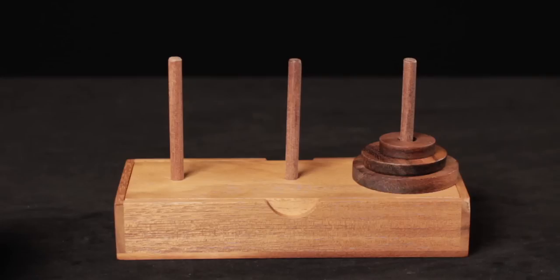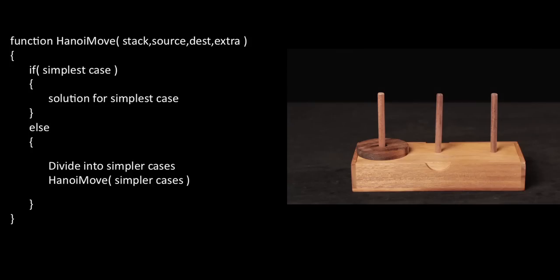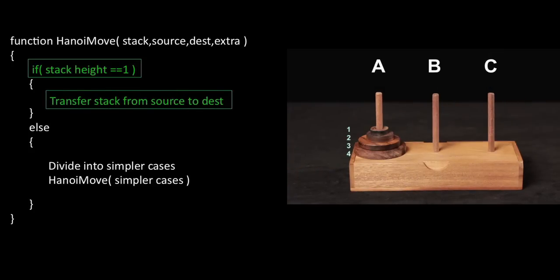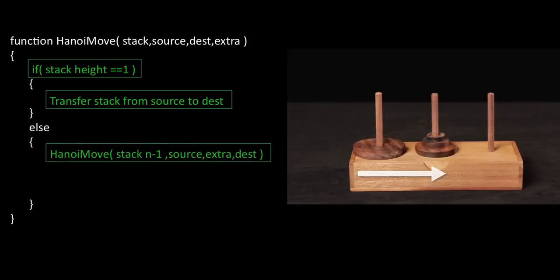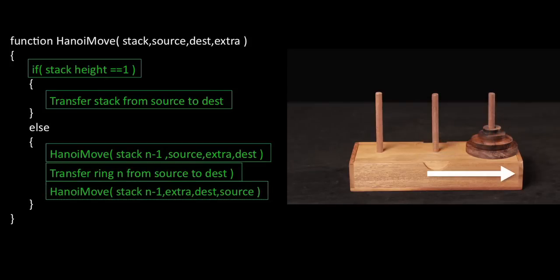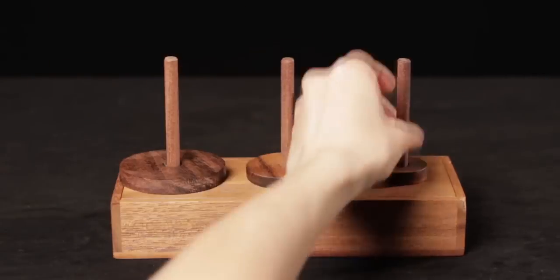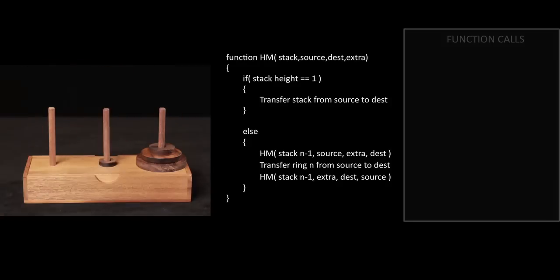Can you frame a pseudo-code solution to the problem? Pause the video here to work out a possible solution. Recall again the general recursive framework: tell the computer how to solve the simplest problem. If we're transferring a single ring, move it to the destination pillar. Then break the problem up into progressively simpler pieces: transfer n-1 rings from the source to the extra pillar, transfer ring n from the source to the destination, and transfer n-1 rings from the extra pillar to the destination. Note that the source, destination, and extra pillar designations change with each function call. It's always a good idea to check your code with a test case. Pause the video and check your code for the case of n equals 4.